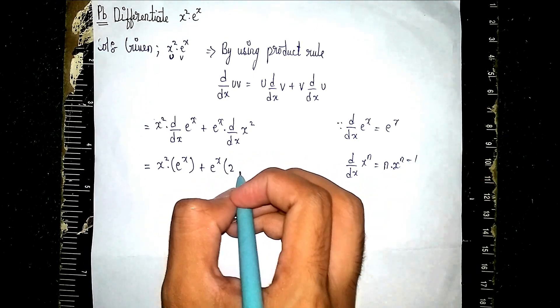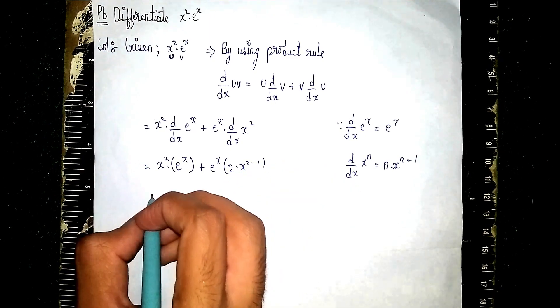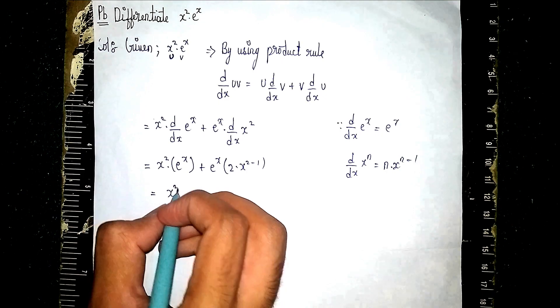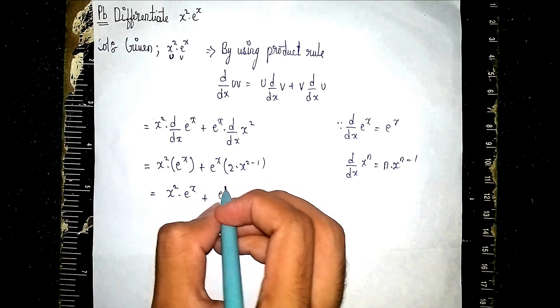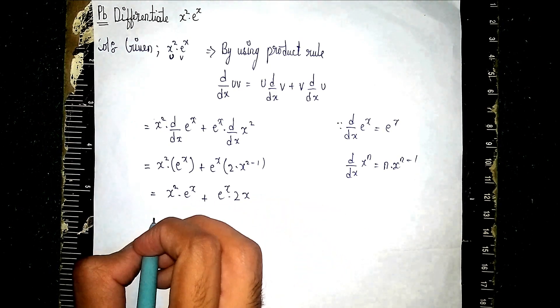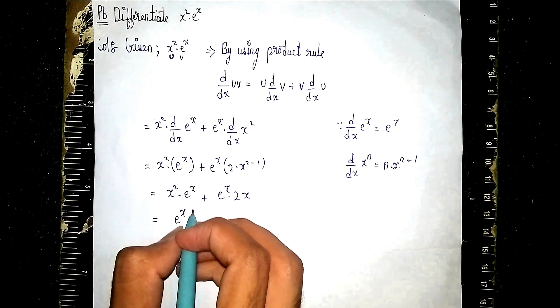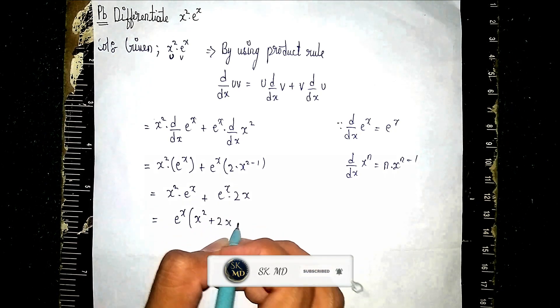It will become 2 · x^(2-1) = 2x. So, x² · e^x + e^x · 2x. Here you can see e^x is common, so take it outside: e^x(x² + 2x). This is our solution.